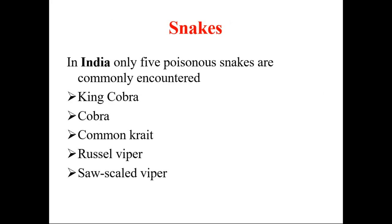In India, only five poisonous snakes are commonly encountered, and we are going to study only these five. They are: king cobra, cobra, common krait, Russell's viper, and saw-scale viper. About 99% of all poisonous bites in India are caused by these five snakes. Note that cobra and king cobra are not the same — they are different.